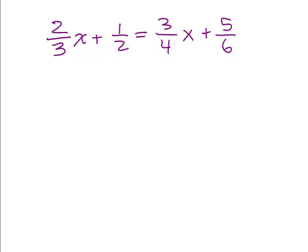So we have to decide what's the least common denominator here. Look at all the denominators. We have 3, we have 2, we have 4, we have 6. So you have to figure that out and hopefully you got 12.